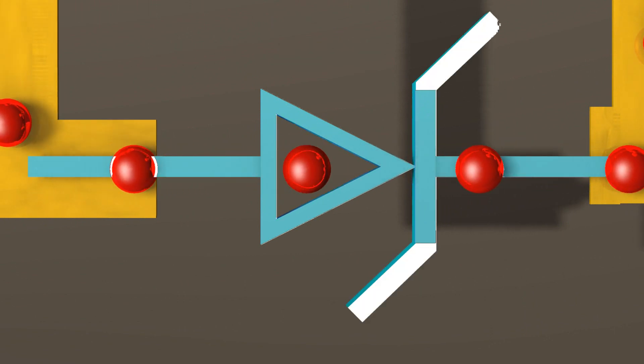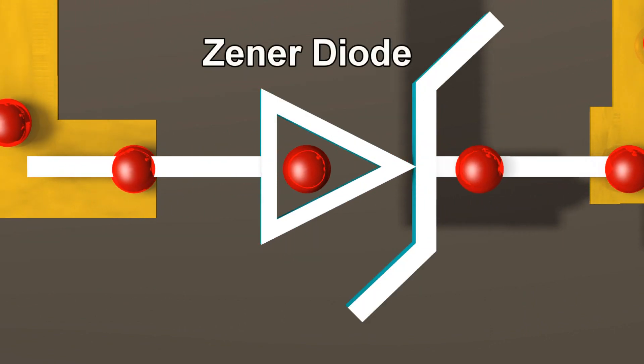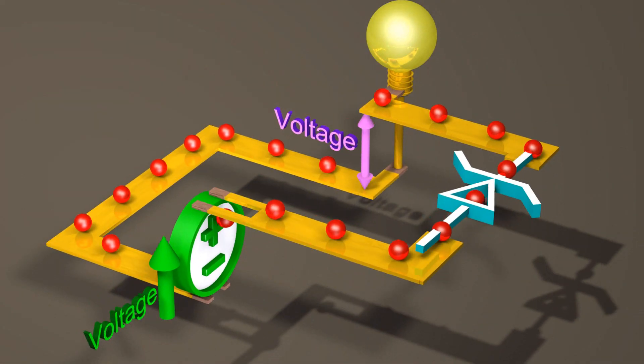Let us now replace the diode with a Zener diode. The Zener diode also allows current to flow in the forward direction, in which case the Zener diode behaves just like a regular diode.